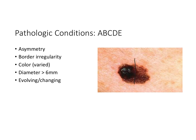First, we have asymmetry — if you were to cut it in half, one half looks very different than the other. Border irregularity — the borders are very rounded and zigzag; they're not regular or discrete. The color is varied — this lesion has very dark brown, lighter brown, almost three different shades. The same lesion with multiple colors is concerning.